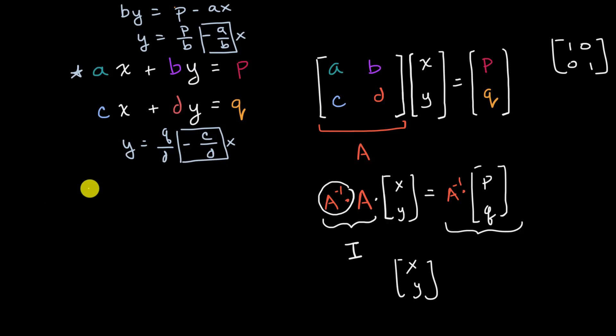So these strange scenarios, not strange, but these scenarios where you don't get a nice, clean, unique solution are the ones where these slopes are equivalent to each other. So we're talking about the scenario in which negative a over b is equal to negative c over d.